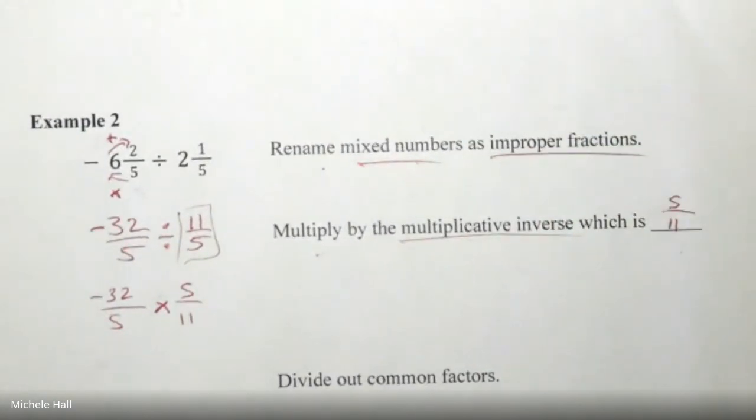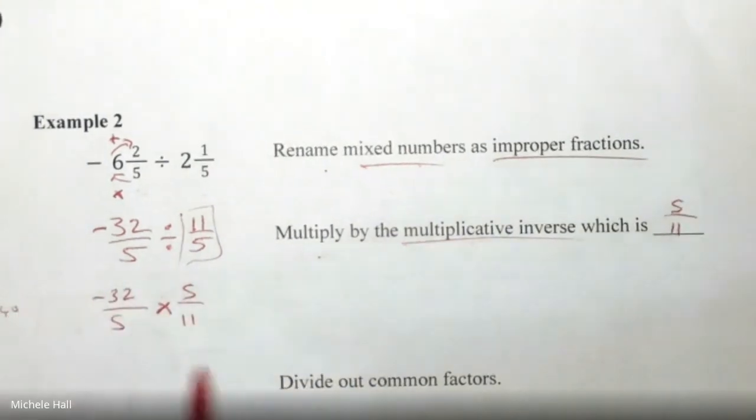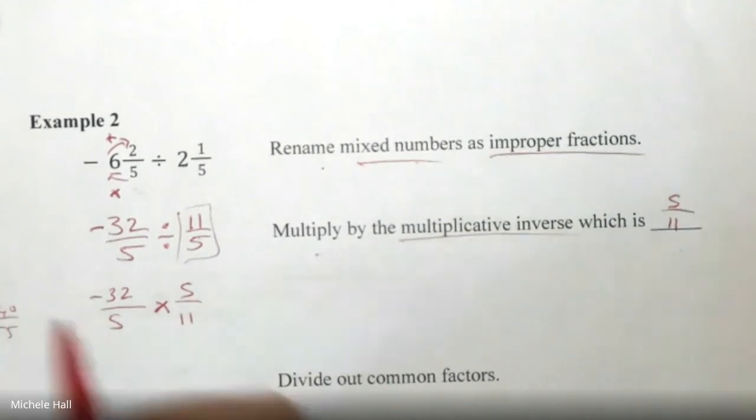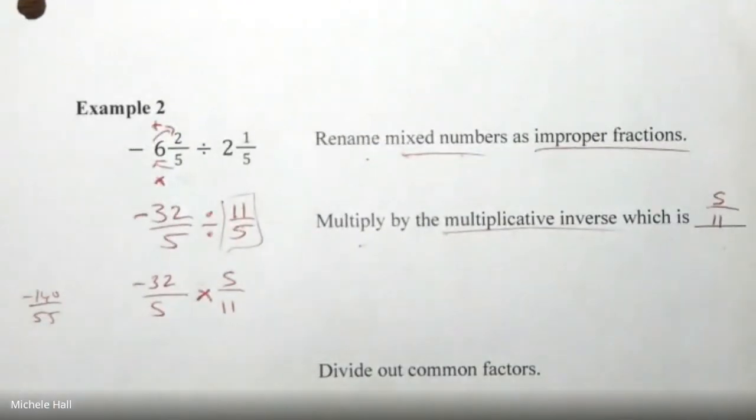We're looking for cross canceling. Some people are just multiplying straight across - this would be like negative 160 over 55, and they leave their final answer as negative 160 over 55. It's half credit because you've only done half the work. Do I want to reduce 160 and 55 - huge numbers - or do I just want to look at my problem? Do we have any reducing to be done here?